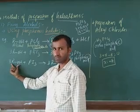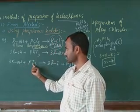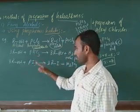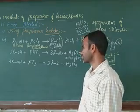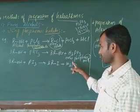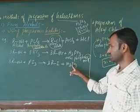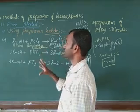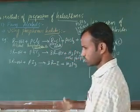The third example: the starting material is alcohol reacting with phosphorus triiodide (PI₃). The product is alkyl halide — or alkyl iodide — plus the release of orthophosphorous acid (H₃PO₃). The oxidation state of phosphorus in H₃PO₃ is +3: 3 − 6 + 3 = 0. These are the general examples from alcohols using phosphorus halides.